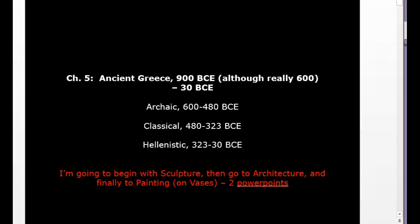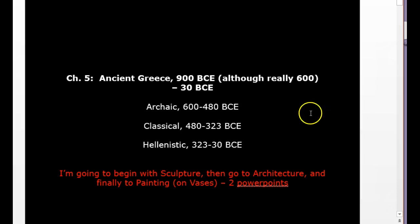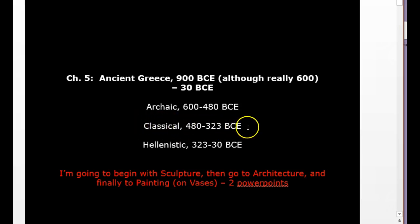Please know that this civilization is different from the others we've studied, especially different from the Egyptian, in the sense that they embrace progress — we can see a progression and development in the art. There are three different periods we use to distinguish major changes: the Archaic period, the Classical, which is the one you probably recognize most easily, and then the Hellenistic.